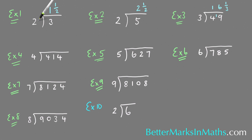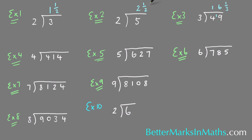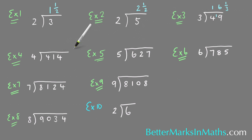Coming back to these: how many 2s in 3? There's 1 and a half 2s in 3. How many 2s in 5? There's 2 and a half 2s in 5. And how many 3s in 49? There's 16 and 1 third 3s in 49.